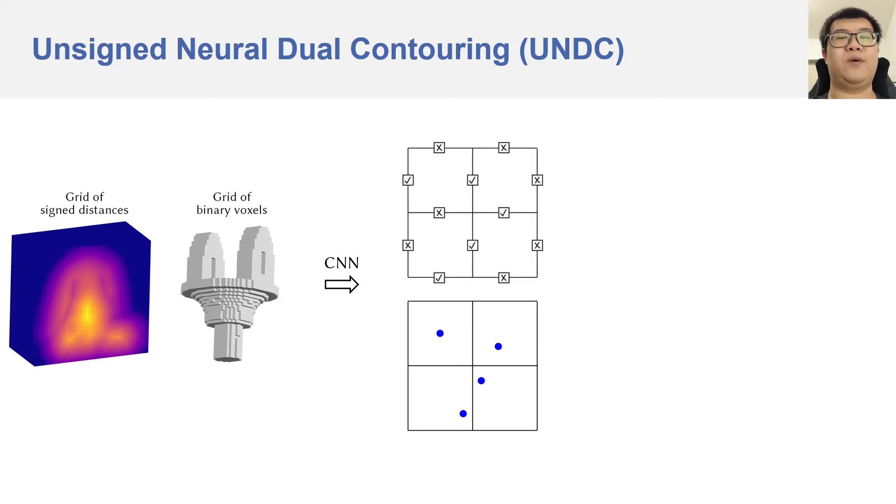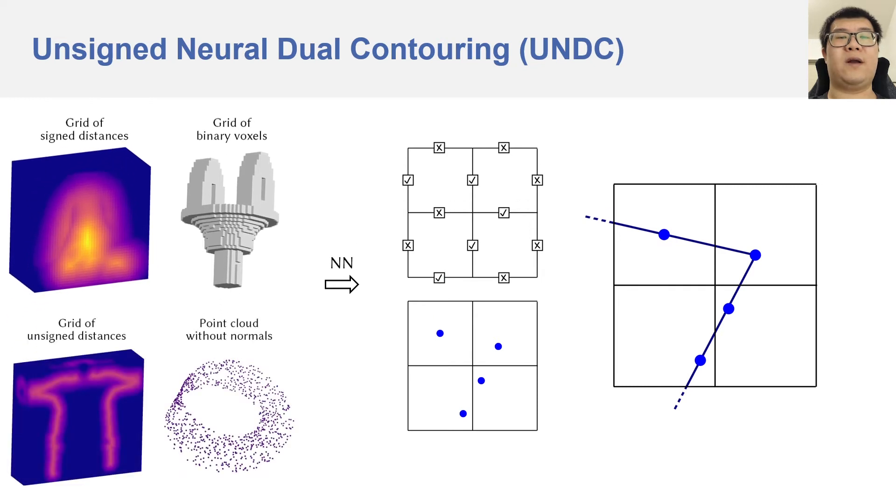We train our network to predict an intersection flag per edge, indicating whether the cell edge is intersected by the surface or not, without accounting for the signs at cell corners. The output mesh is created by generating one face for each predicted edge intersection. Since UNDC does not need to predict the signs of the grid vertices, it is able to take unsigned inputs, such as unsigned distances or point clouds without normals, and output polygonal meshes with open boundaries.